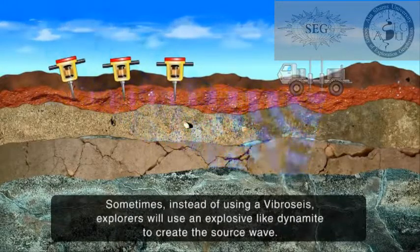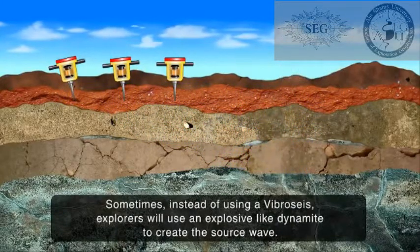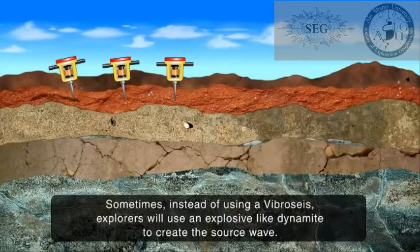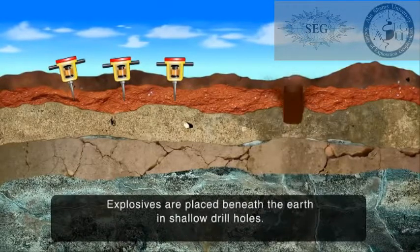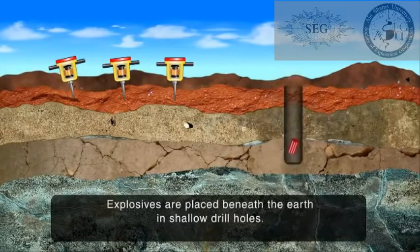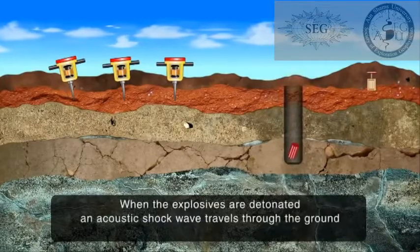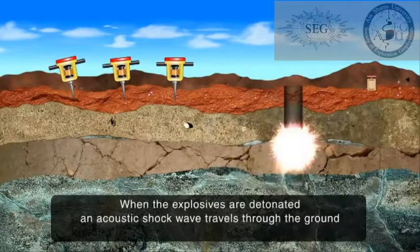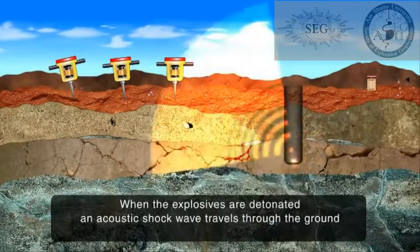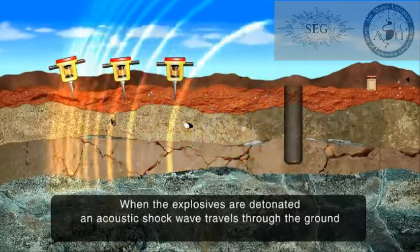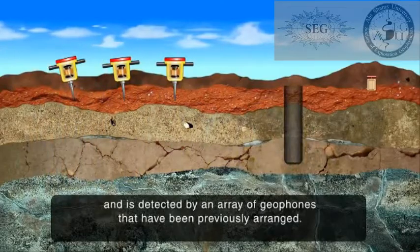Sometimes, instead of using a vibrasize, explorers will use an explosive like dynamite to create the source wave. Explosives are placed beneath the earth in shallow drill holes. When the explosives are detonated, an acoustic shock wave travels through the ground and is detected by an array of geophones that have been previously arranged.